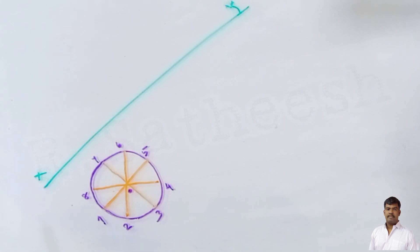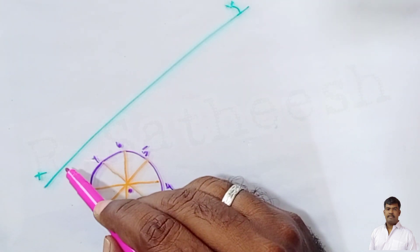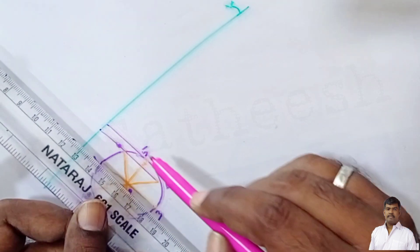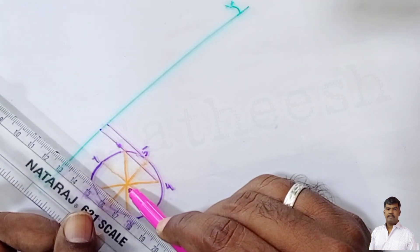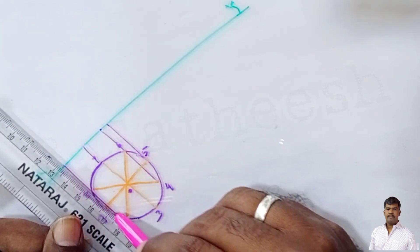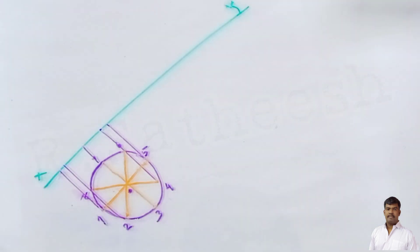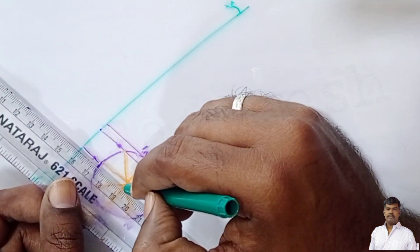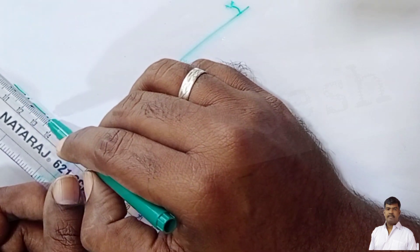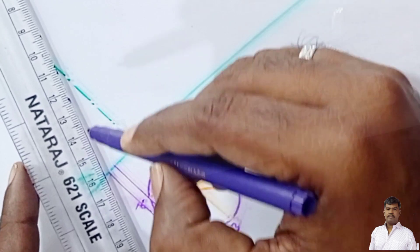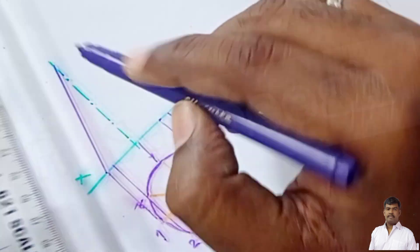The base completely lies on HP initially, so we draw the projection lines. Project points 5, then 4 and 6, then 3, center O, and 7, then 2 and 8, then 1. The axis line is shown as a center line (dot-dash or long-short-long line). This completes the top view. In the front view, it appears as a triangle.